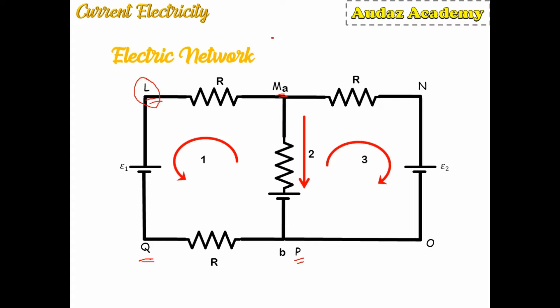The third terminology is a branch. A branch is any part of a network that lies between junction points. In our case, there are three branches which are shown with arrows.